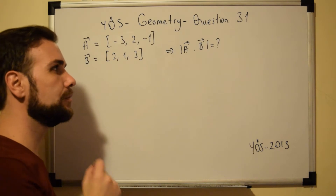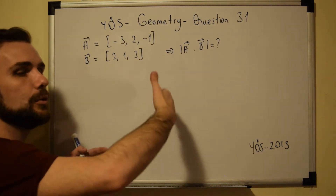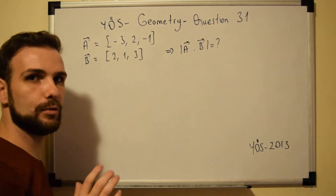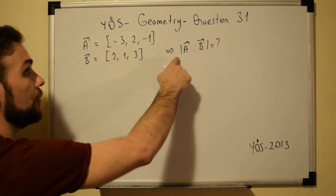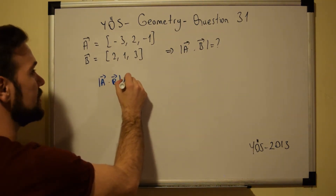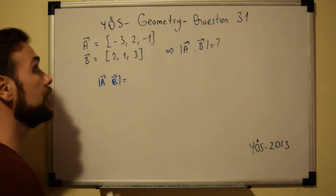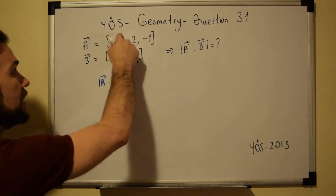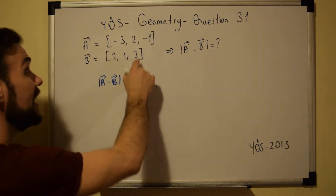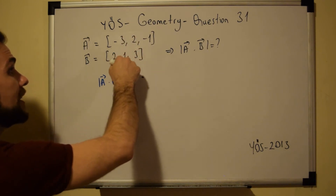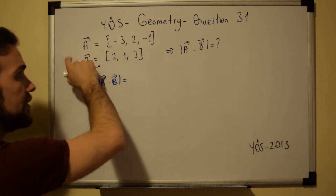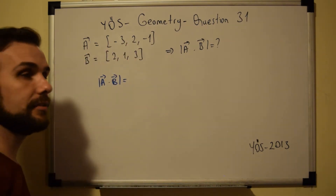One element you have to remember when you are dealing with vectors: we are dealing with distance. As soon as you are dealing with distance, you always have to take the absolute value of the vectors. When you multiply two vectors, you always multiply the first number of the first vector times the first number of the second vector, plus the second number of the first vector times the second number of the second vector, plus the third number of the first vector times the third number of the second vector.